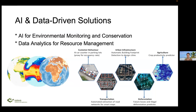Now let's shift our focus to AI and data-driven solutions. Artificial intelligence plays a substantial role in our efforts to monitor and safeguard the environment. Through sophisticated algorithms, we can analyze extensive data sets to track wildlife populations, discover shifts in ecosystems, and even anticipate potential environmental threats — representing a significant potential in our capacity to comprehend and protect the natural world. Advanced data analytics also assumes a pivotal role in resource management: by leveraging data-driven insights, we can optimize resource allocation, reduce waste, and make informed decisions that promote sustainability.